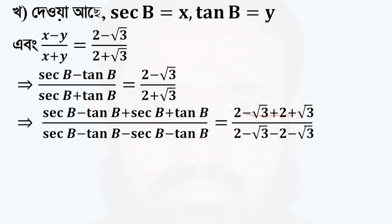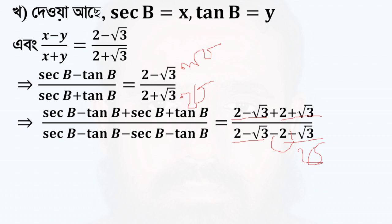If we see the value is 2 plus root 3, then the value is 2 minus root 3. This is 2 minus root 3. Then we can see 2 plus root 3. If we see 2 minus root 3, the value can be lower.